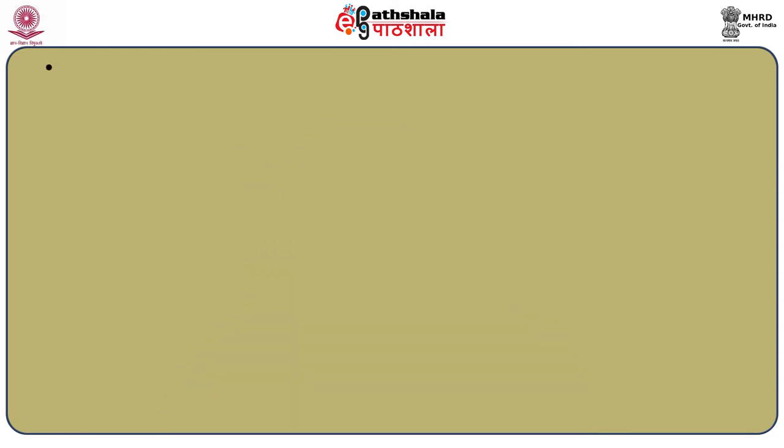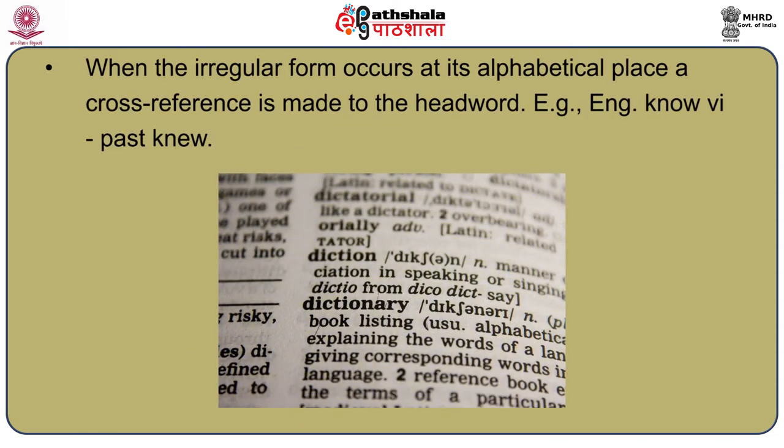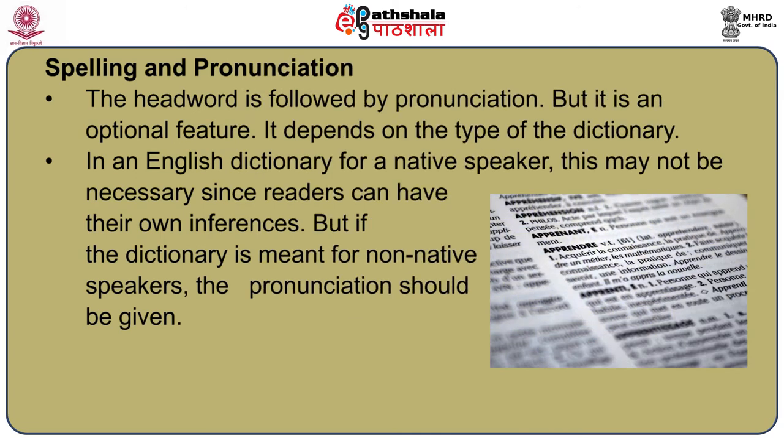Generally, such forms are treated in the following way in the dictionary: the canonical form is given as the headword, the irregular form is given along with it in the entry, and when the irregular form occurs first in alphabetical order, a cross-reference is made to the headword. But in digital form, every word is a headword, so each word can be discussed separately.